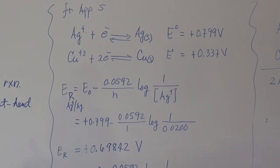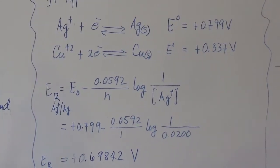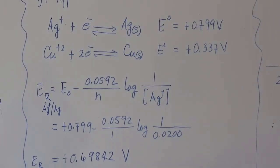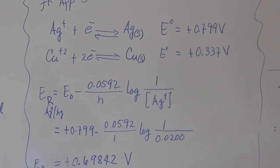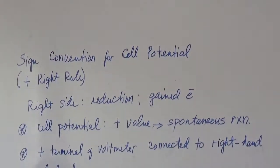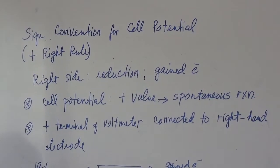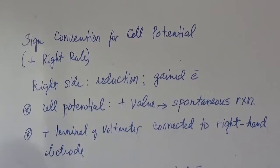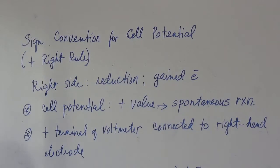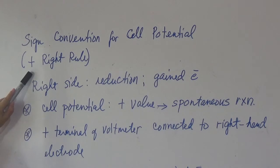The electrode potential for every half reaction is a constant value. It is indicated with E with a superscript of zero, and we call it standard electrode potential. You can find it in Appendix 5. There is a sign convention approved by IUPAC, called the plus right rule.